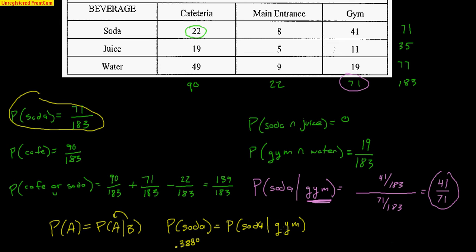Now, what about the probability that you get a soda from the gym? Well, that was, again, conditional probability that we already figured out over here. Of the 71 beverages sold in the gym, 41 were soda. So 41 out of 71 is 0.5775.